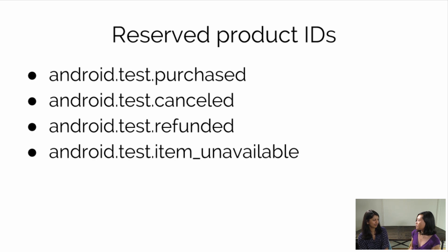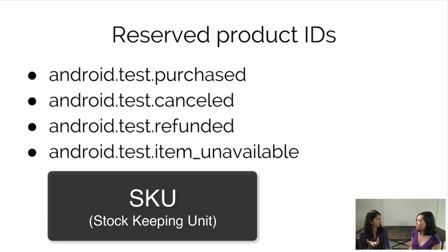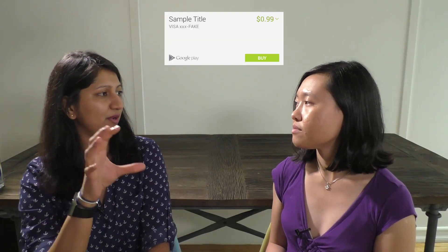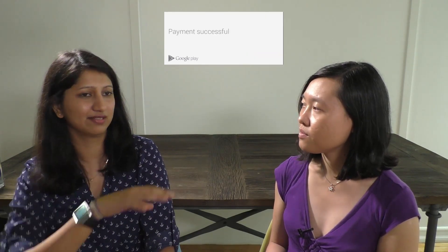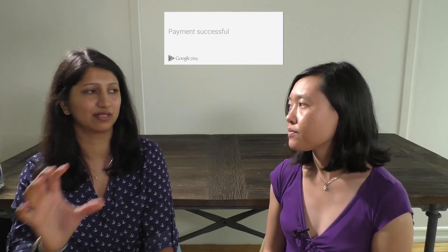I'm not going to pay myself every time I want to test my UX flow. Is there a way to simulate a transaction without actually paying? They have reserved product IDs — something like android.test.purchased. So instead of buying your normal subscription, you're buying a test product and your credit card will not be charged. It doesn't ask for your credit card at all — Google Play Store pops a dialogue showing fake information, you hit buy, it does a fake purchase workflow and shows a payment successful dialogue.